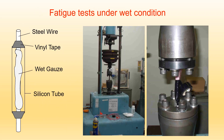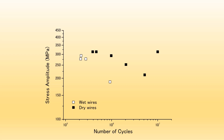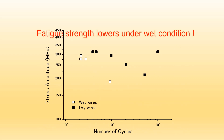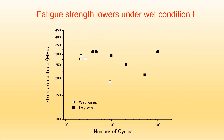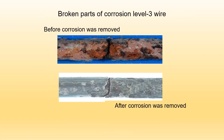We also carried out cyclic tests under wet conditions. A wire is wrapped with wet gauze, inserted into a silicon tube, sealed with vinyl tape, and tested. The results show that fatigue strength lowers under wet conditions. This is bad news because in most cases cables are in a wet environment when they corrode. The wire was broken at the most severely corroded part.